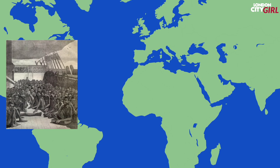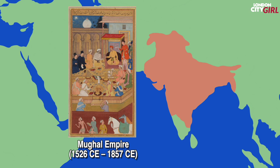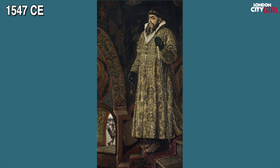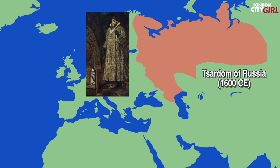Between 1526 CE to 1857 CE the classic period of the Mughal Empire saw the region enjoy economic progress as well as religious harmony. Between 1543 CE to 1687 CE a series of events marked the emergence of modern science including the publication of Nicholas Copernicus's book On the Revolutions of the Heavenly Spheres and Isaac Newton's Mathematical Principles of Natural Philosophy. In 1547 CE Ivan the Terrible was crowned the first Czar of Russia and by annexing the Turkic Khanates in the east he transformed Russia into a regional power.